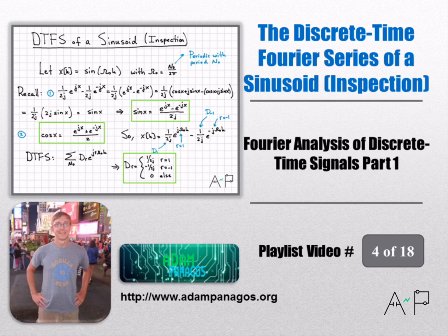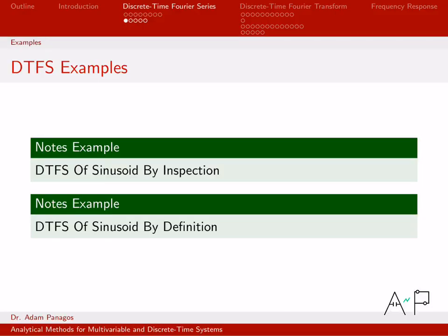All right, so we've been talking about the discrete time Fourier series. In the last video, we actually derived the equation that lets you compute the discrete time Fourier series coefficients as a function of the discrete time signal x of k.